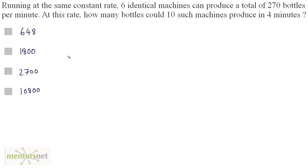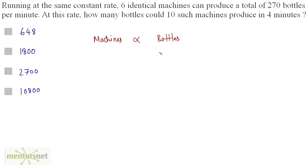Running at the same constant rate, 6 identical machines can produce a total of 270 bottles per minute. At this rate, how many bottles could 10 such machines produce in 4 minutes? We have number of machines and number of bottles. If you increase the number of machines, the bottles produced will also increase. So number of machines is directly proportional to the number of bottles produced. We have 6 machines producing 270 bottles per minute.